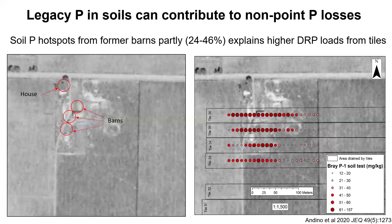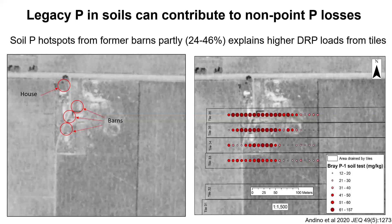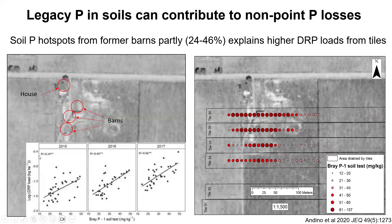A field-scale example from Douglas County, south of Champaign, published in 2020 by Lowell's group, shows formerly active hog production sites where Bray phosphorus levels reached up to 157 ppm — way over the 15 to 20 ppm threshold above which we don't need to apply more P. These Bray P hotspots in the top six inches overlie tiles installed today. From 24 to 46% of the dissolved reactive phosphorus loads through tiles can be explained by the Bray phosphorus, suggesting that up to 40% of our DRP losses in 2020 through tiles are coming from manure from hogs from the 1930s to 1950s at this site.